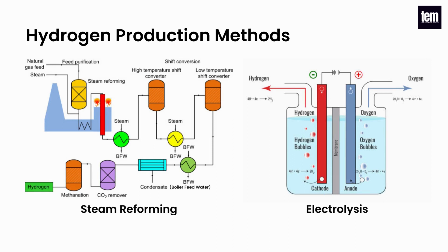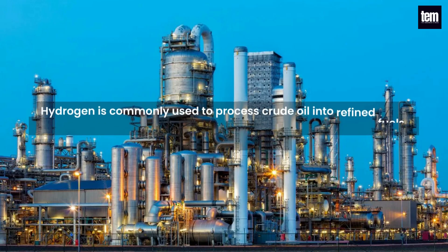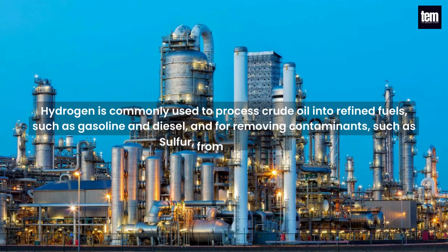The two most common methods used to produce hydrogen are: steam reforming, a high-temperature process in which steam reacts with a hydrocarbon fuel to produce hydrogen; and electrolysis, a process that splits hydrogen from water using an electric current. Hydrogen is commonly used to process crude oil into refined fuels such as gasoline and diesel, and for removing contaminants such as sulfur from these fuels.